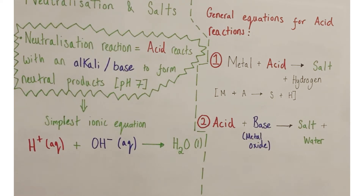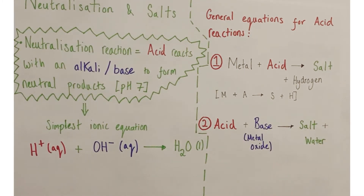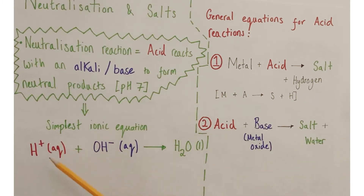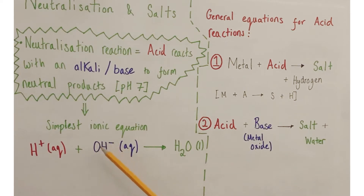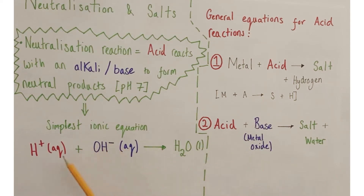A neutralization reaction is when an acid reacts with either an alkali or a base to form neutral products — most often a salt and water. In simple ionic terms: the hydrogen ion (the acidic particle from acids) reacts with the hydroxide ion (OH⁻) released by the alkali to form the neutral water molecule. That is the ionic equation representing a neutralization reaction.